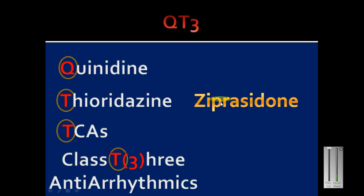Ziprasidone is also an antipsychotic like thioridazine, but it's an atypical antipsychotic. Thioridazine is a typical one. How do you remember this in this mnemonic? Well easy, you have to just pluralize it: QT3 becomes QT3z.